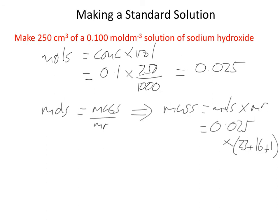Our relative atomic mass of oxygen is 16 and our relative atomic mass of hydrogen is 1. I'm assuming that you're able to give me the formula of sodium hydroxide which is NaOH. And if we put that into a calculator it actually comes out as 1 gram.